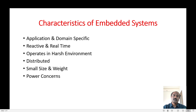These are the different characteristics of embedded systems to consider when buying or designing one. In summary: embedded systems are application and domain specific; they are reactive and real-time; they operate in harsh environments; they are distributed in nature; they are small in size and weight; and they have specific power requirements. Thank you.